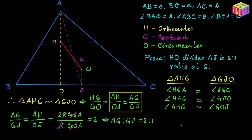This means the line segment HO divides the median AJ in a 2 to 1 ratio at point G, which means G is also on the same line segment as H and O. Therefore H, G, and O are collinear, meaning the orthocenter, the centroid, and the circumcenter are three collinear points.